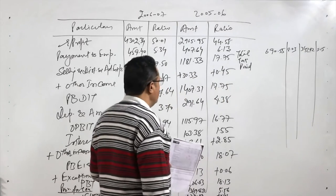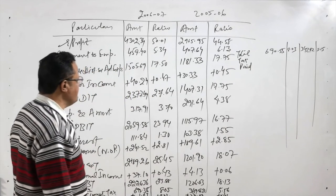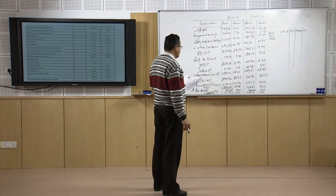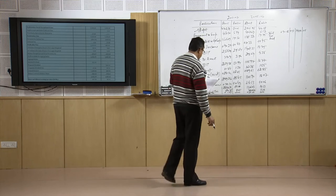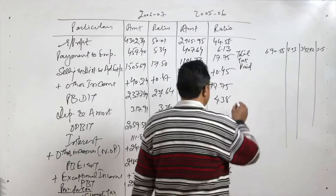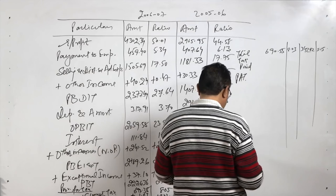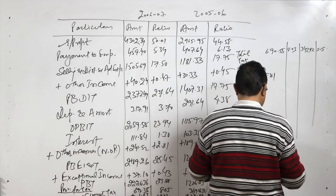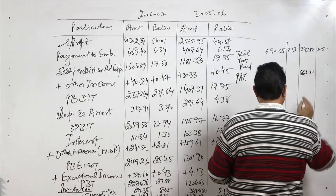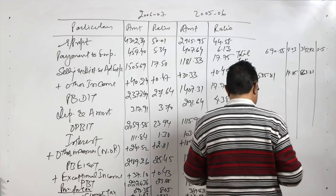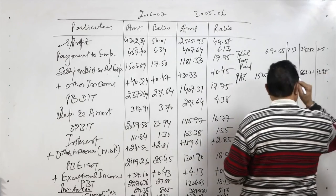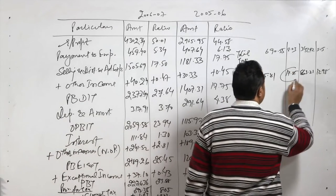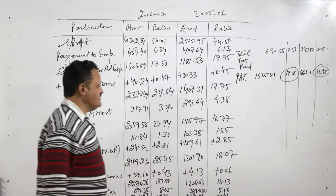The income tax works out as 8.03 percent of sales — since sales is the common denominator — up from 5.15 percent in the previous year. The tax component has gone up because the profit has increased. Finally, profit after tax (PAT) is 1535.81 crores at 17.85 percent for the current year, compared to 863.21 crores at 12.98 percent for the previous year — almost 18 percent profit after tax versus 13 percent in the prior year.